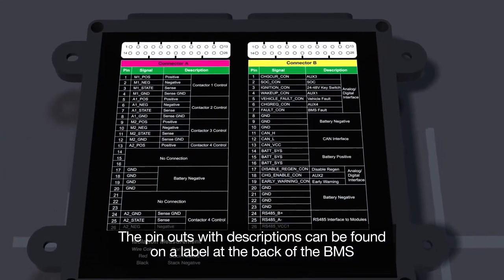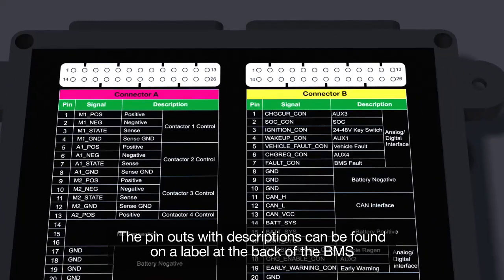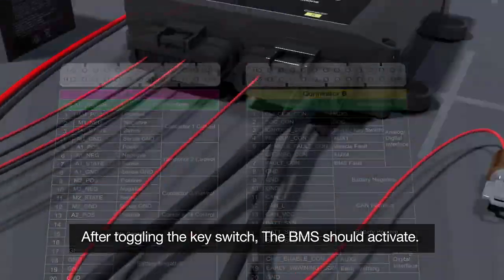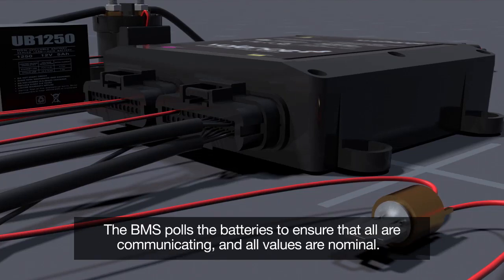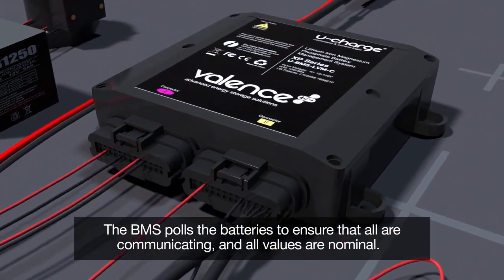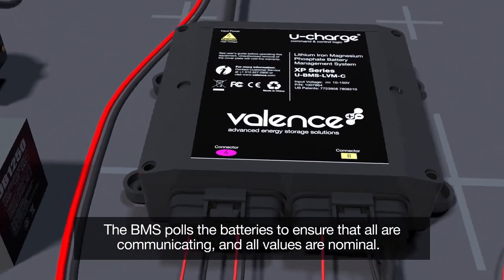The pin outs with descriptions can be found on a label at the back of the BMS. After toggling the key switch the BMS should activate. The BMS polls the batteries to ensure that all are communicating and all values are nominal.